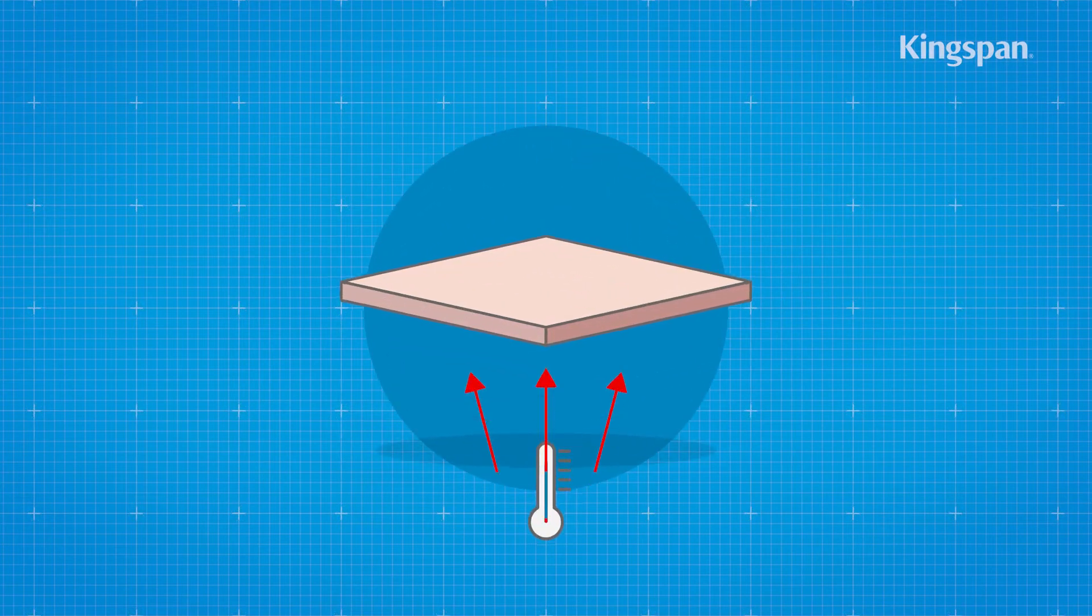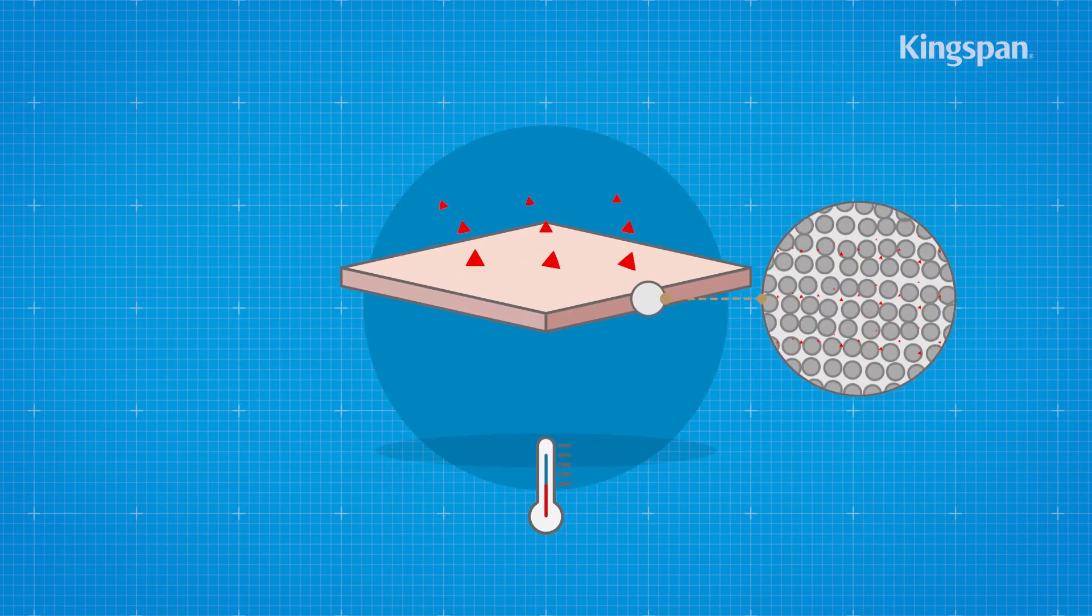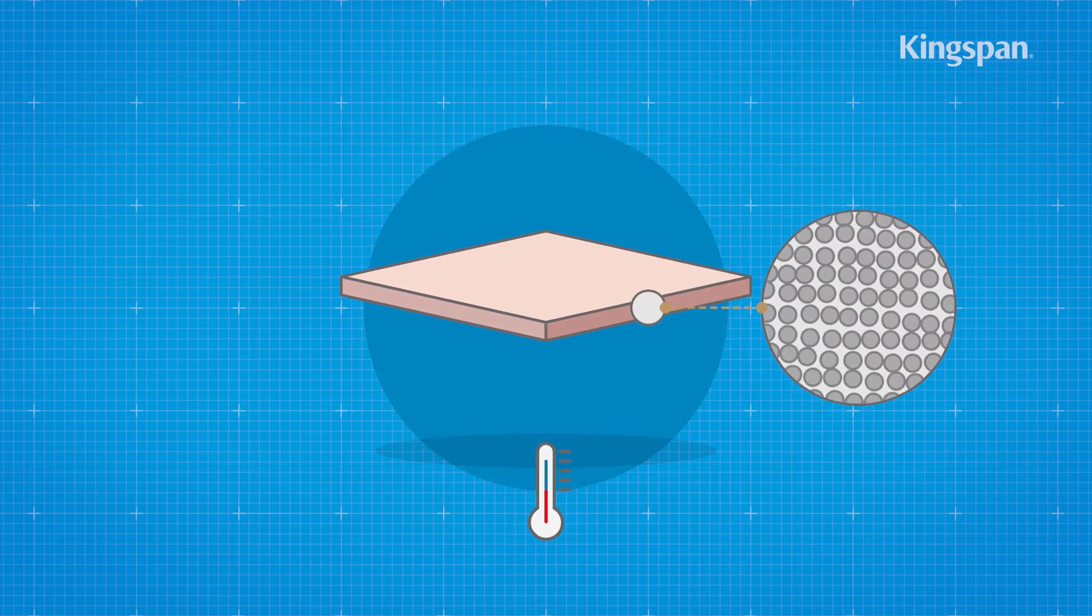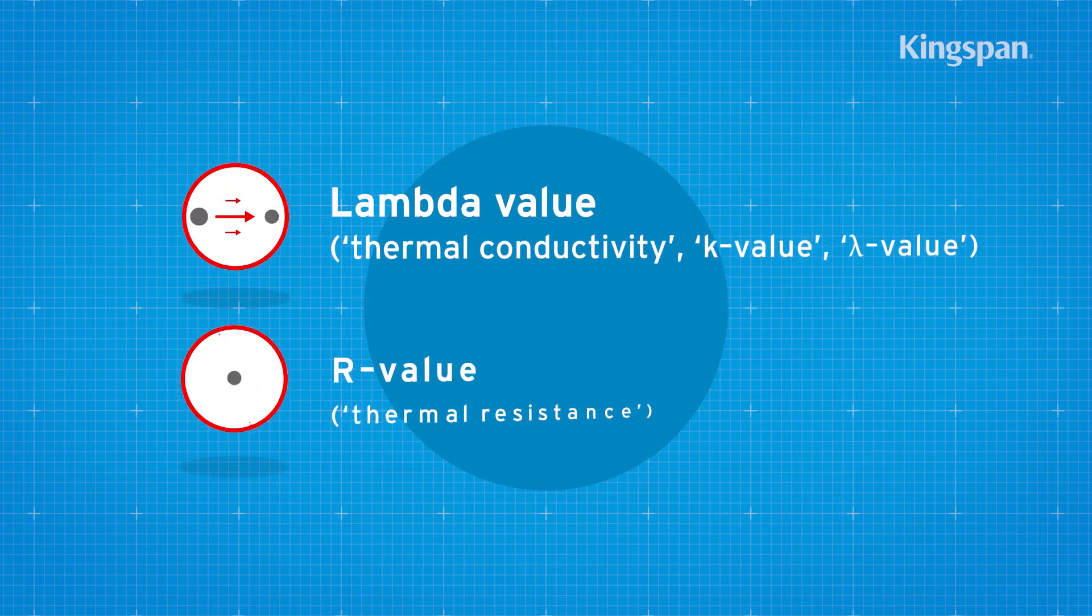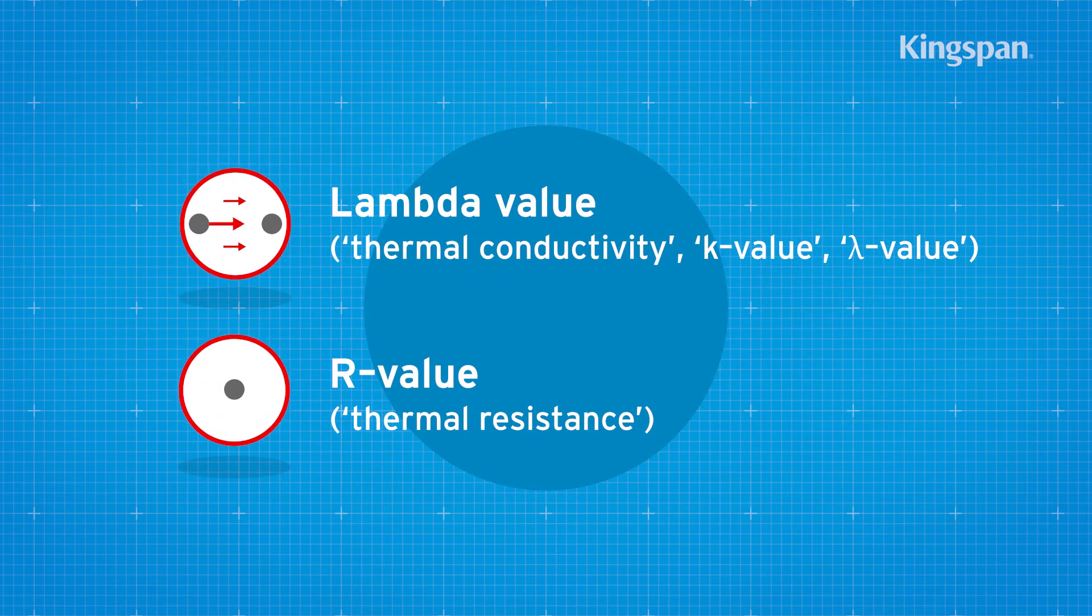Thermal insulation is measured by its ability to restrict heat transfer through thermal conductivity and thermal resistance. These are known as lambda values and R values respectively.